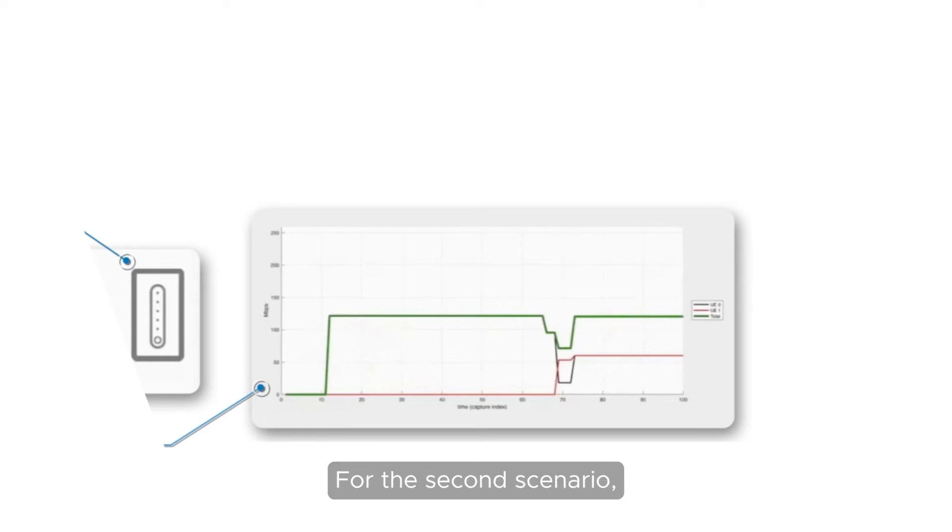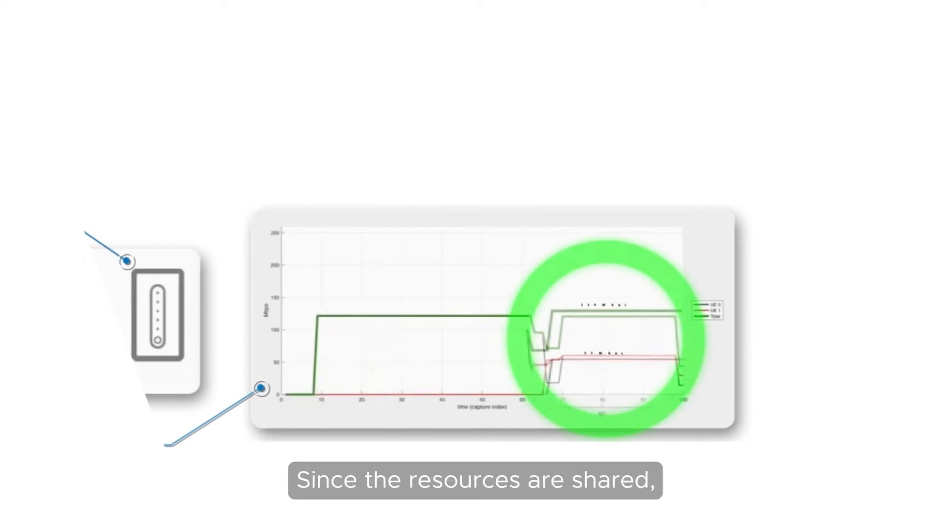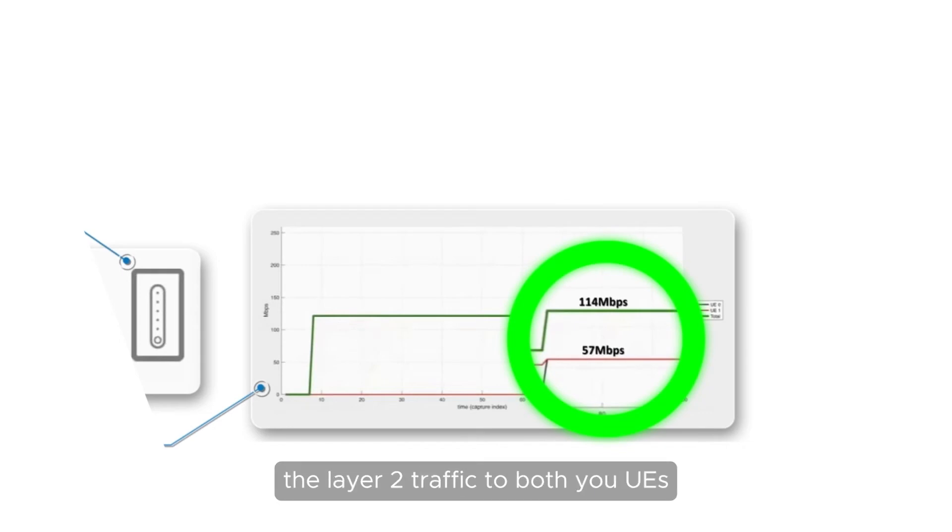For the second scenario, we will enable traffic to both UEs so that they share the physical layer resources in single-user MIMO. Since the resources are shared, the layer 2 traffic to both UEs is now about 57 Mbps and corresponds to an aggregate cell throughput of 114 Mbps.